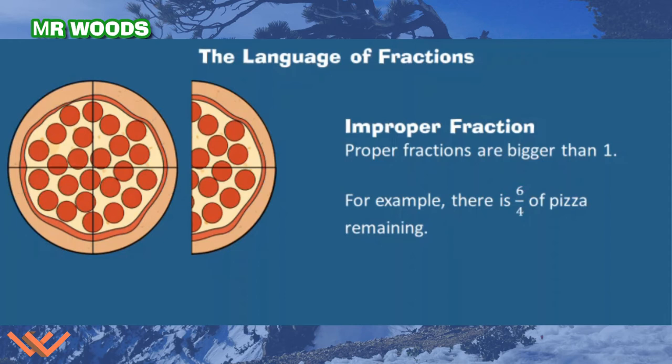Improper fractions. Fractions that are bigger than one. If you notice, I have this whole pizza divided into fourths. And I have this half pizza, and it's also divided into fourths. So if I add these together, I have 1, 2, 3, 4, 5, 6 fourths of pizza.